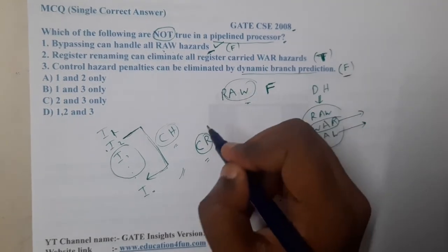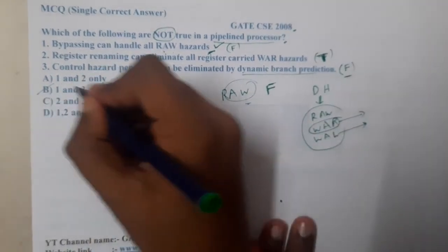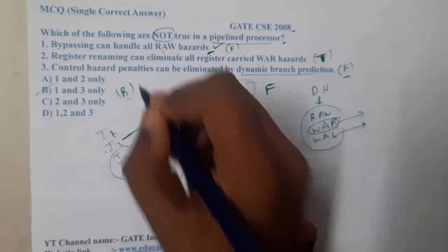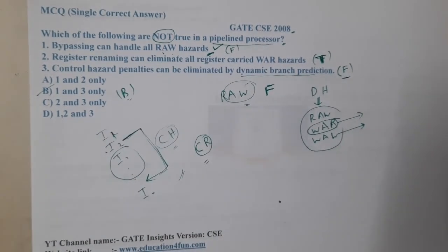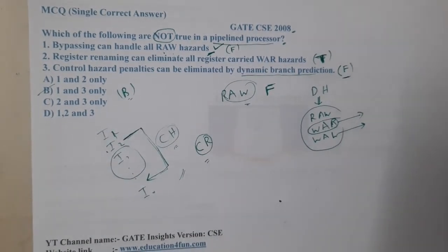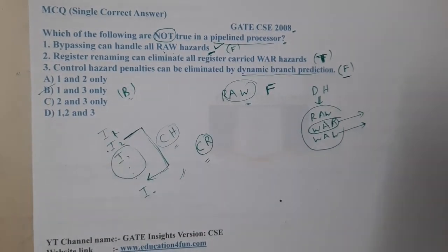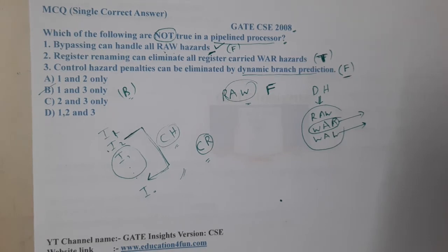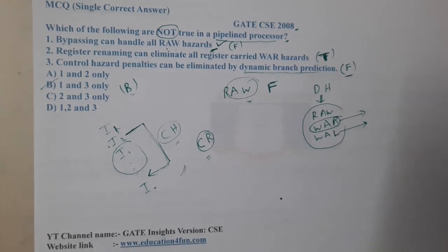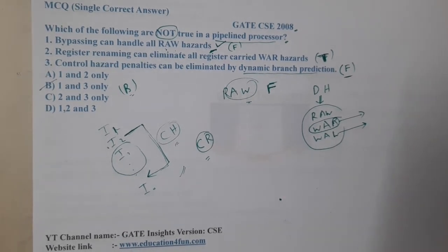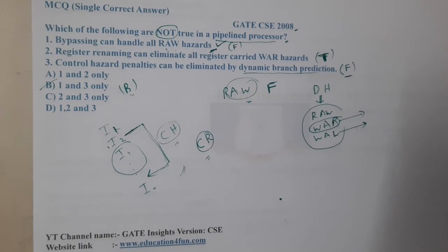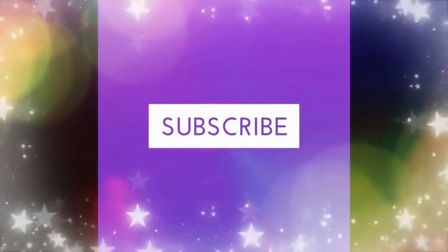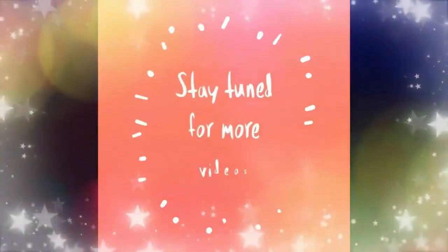So options 1 (A) and 3 (D) are wrong, meaning B is the correct answer since the question asks for the false statements. I hope everyone got a clear idea with respect to this question. In the next lecture we will continue with the next question. Thanks for watching — like, share, and subscribe for more videos.